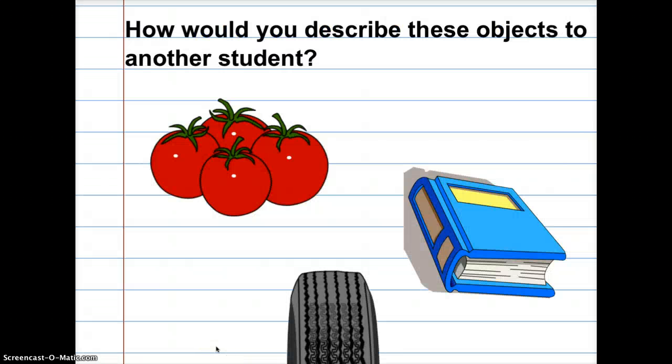Okay, so as I bring this video to a close, just wanted to end off with just one question. How would you describe these objects to another student? So we have tomatoes, a book, and a tire. How would you describe these objects by looking at physical and chemical properties? Thanks for watching.